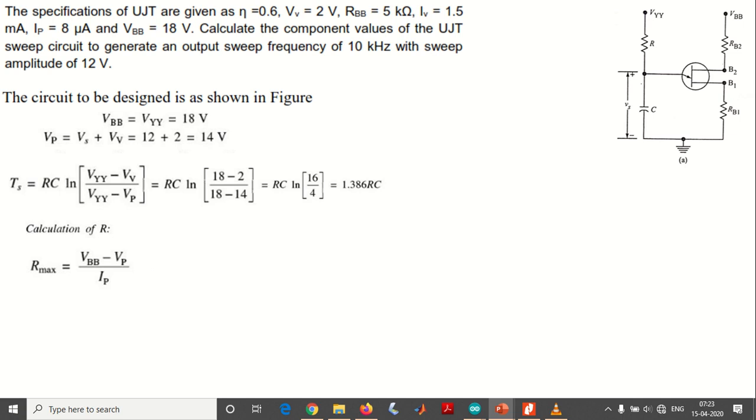We have to calculate R max and R minimum. In finding R max, we consider peak voltage and peak current. VBB is 18 volts, so 18 minus 14 by IP, which is 8 microamps, gives you 0.5 mega ohms as the maximum value of R.